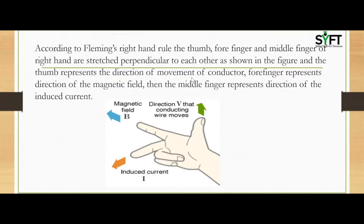The thumb represents the direction of the movement of the conductor, the forefinger represents the direction of the magnetic field, and the middle finger represents the direction of the induced current.